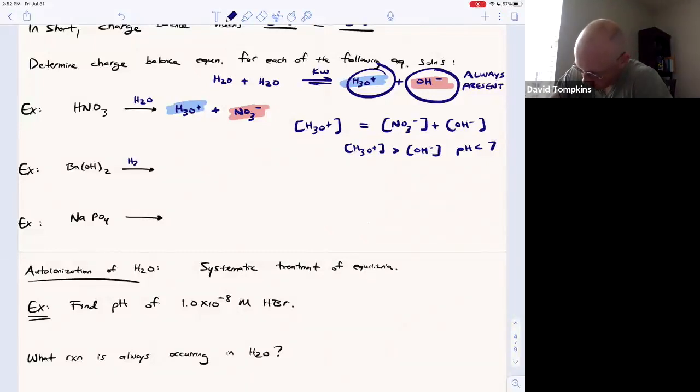In water, barium hydroxide is going to turn into barium divalent cation and two hydroxide ions. So this time we're introducing a new cation. So now in this solution, we have two cations. We have barium and we have hydronium.